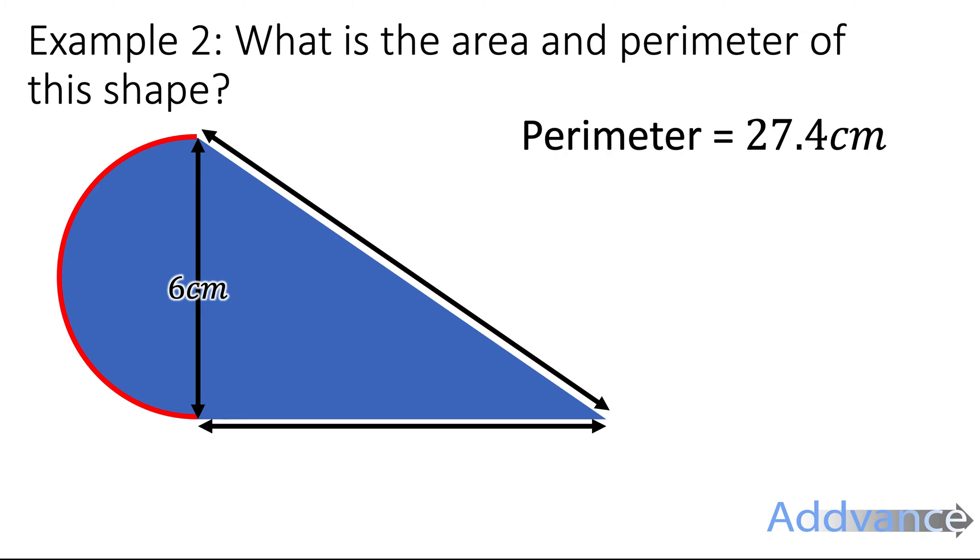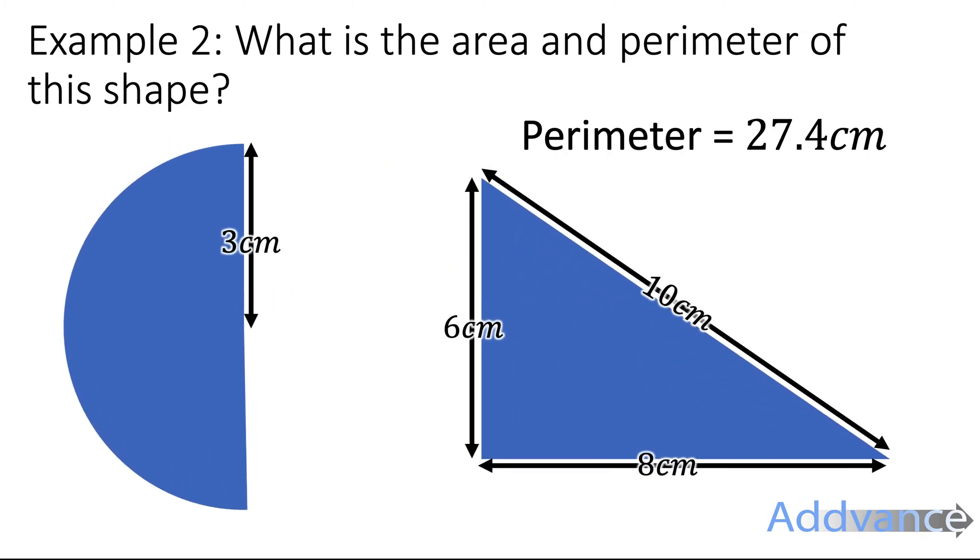Now we need to work out the area. And we've got a semicircle and we've got a triangle. To work out the area of the semicircle, we're going to do the area of a circle and then half it.